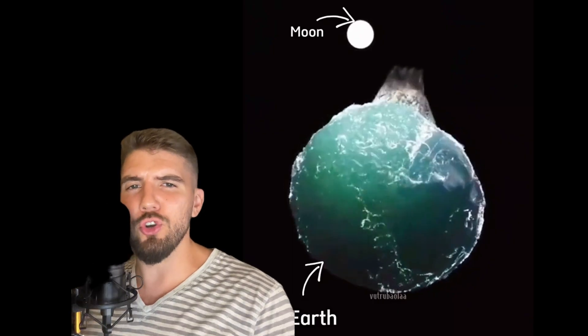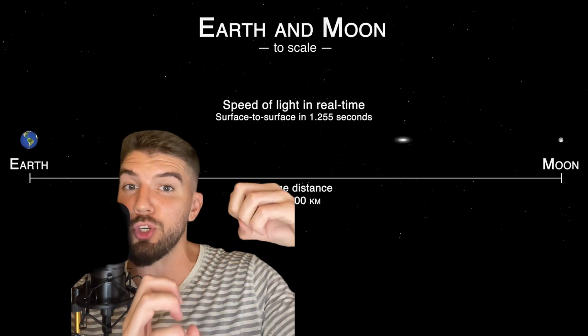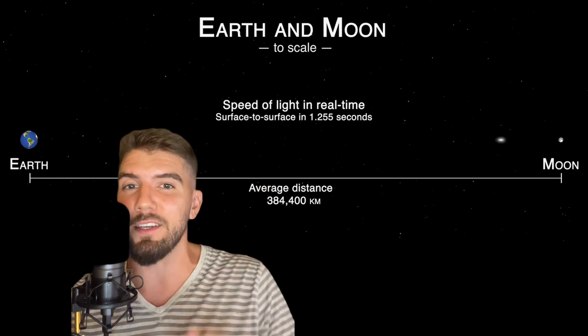So Einstein realized, under Newton's model, in order for Earth's gravity to instantly affect the moon, this gravitational force between the Earth and the moon would have to travel 384,000 kilometers, which is the distance between the Earth and the moon, in an instant, which is faster than the speed of light. Which is physically impossible, because you never go full light speed.